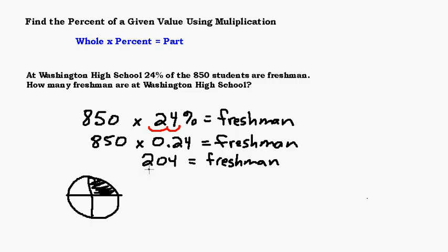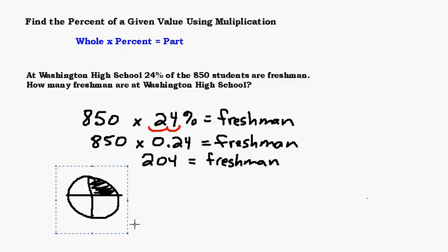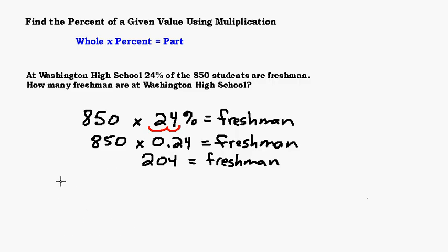Always look at your answer and see if it makes sense. If you forget to move your decimal and you take 850 times 24, you're going to get a huge number. Using your common sense, you can look at that and go: wait a minute, I must have made a mistake — and go back and fix it. So always make sure your answer makes sense. If you didn't have a calculator, you would simply have to do long multiplication: 850 times 0.24.